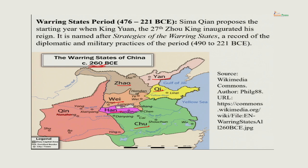The Warring States period begins according to Sima Qian, author of Records of the Grand Historian, in 476 BCE — the year when King Yuan, the 27th Zhou king, inaugurated his reign. This period gets its name from another book called Strategies of the Warring States, which is a record of the diplomatic and military practices of the period — recording the strategies each of these kingdoms followed in order to become the hegemonic power.